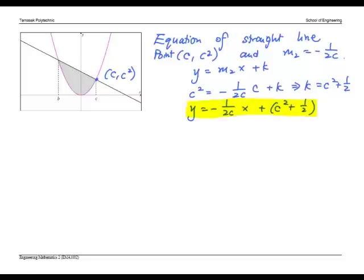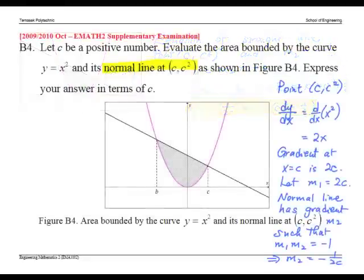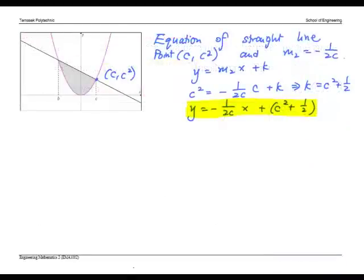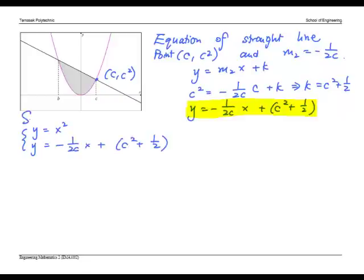Now in order to find the shaded area, we need to find b since from the question all answers must be in terms of c. To find b, we solve the equations y equals x squared and the straight line. Solving, we get, now this is a quadratic equation.